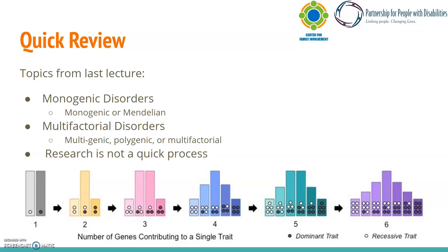Furthermore, we tend to see a bit more variation in these multifactorial disorders. A good example to remember for these kinds of disorders is Autism Spectrum Disorder. We also briefly covered the challenges in research, and that research is a slow process. Although we want to find ways to remove negative factors of a disorder, we also want to ensure that they are safe, meaning that some drugs take multiple years to get tested and approved.